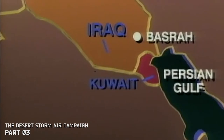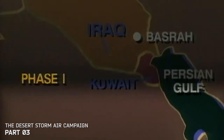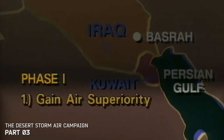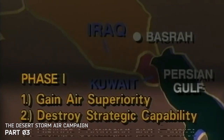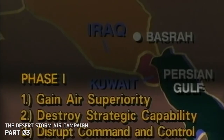The Desert Storm air campaign would have four phases. Phase one had three goals: gain air superiority, destroy Saddam's strategic capability — namely his NBC weapons and long-range missiles nicknamed Scuds — and disrupt his command and control. The Allies estimated the first phase would last 20 to 25 days.